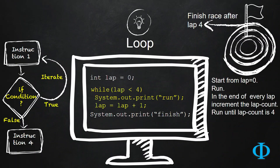Starting from this video onwards, we are going to learn our next control structure which is called Loop. Loop in the programming context means repetitive execution of the same set of instructions based on some condition. That is, as long as a condition holds true, a set of instructions will execute again and again. And when the condition becomes false, it will break the loop and execute the rest of the program.